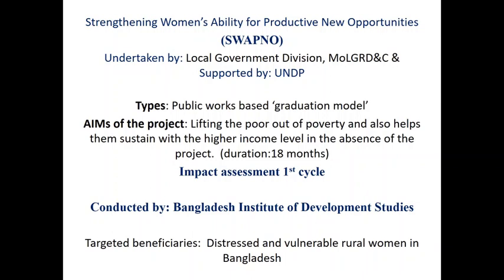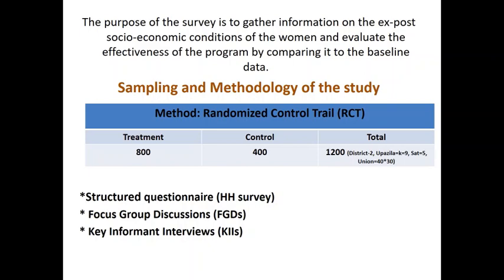The impact assessment targeted distressed and vulnerable rural women in Bangladesh. The purpose of the survey is to gather information on the socioeconomic condition of the women and evaluate the effectiveness of the program by comparing it to the baseline data. Having baseline data makes it easier to measure program effectiveness. The methodology used was a randomized control trial.